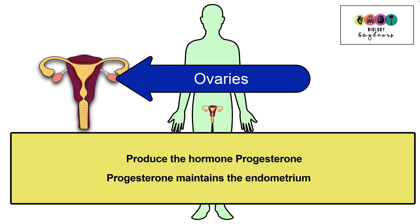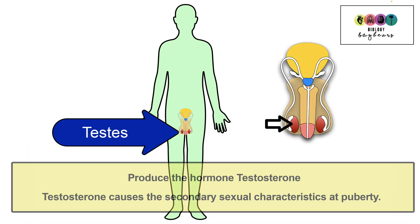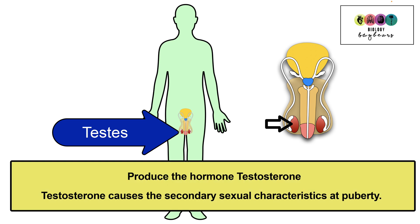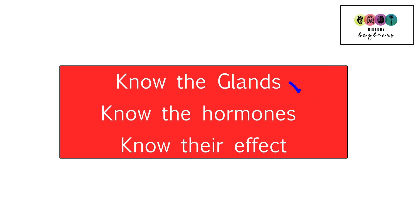The ovaries also produce the hormone progesterone. Progesterone maintains the endometrium in readiness for a pregnancy. The testes in males produce the hormone testosterone, which causes the secondary sexual characteristics in males at puberty. So know the glands, know the hormones, know their effect. That's a good place to start and remember you'll meet many of them again in human reproduction. Best of luck.